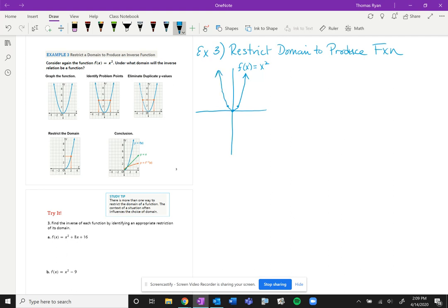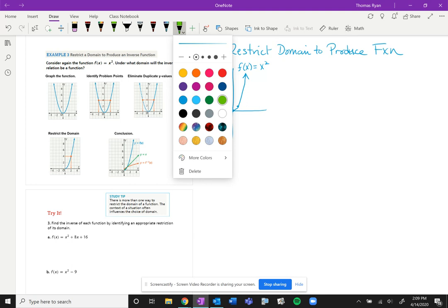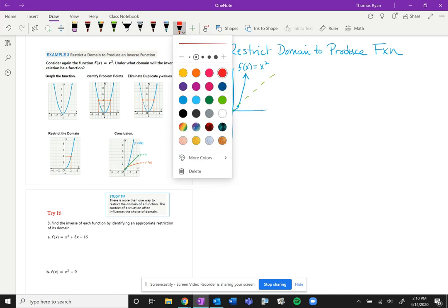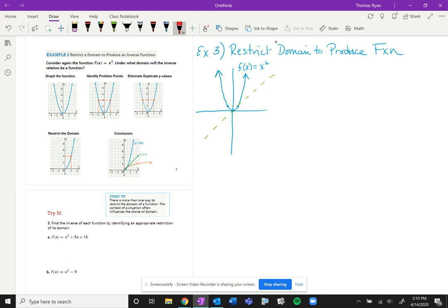Now in order for this function, its inverse—right, again the line y equals x, that nice line that goes right through the origin—our inverse will have to be the parabola tipped on its side. So this is the inverse.